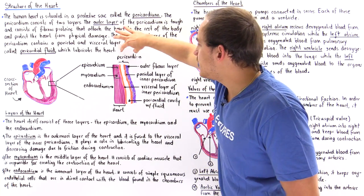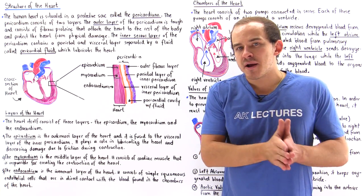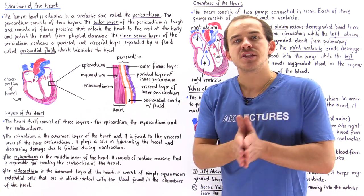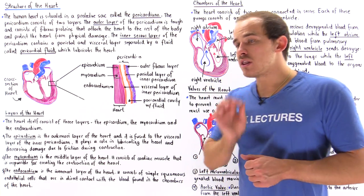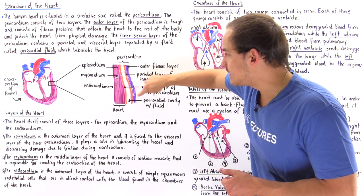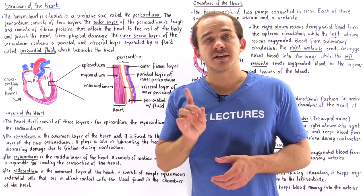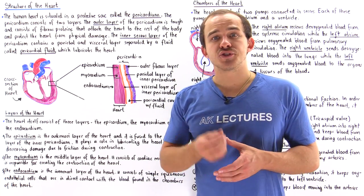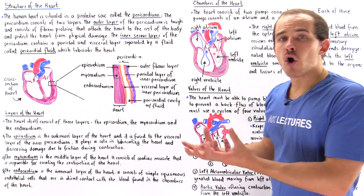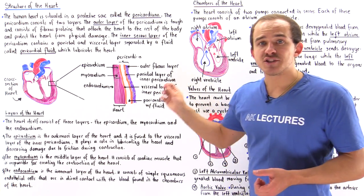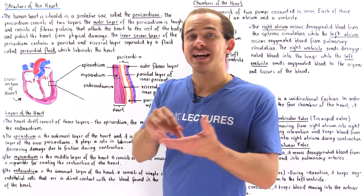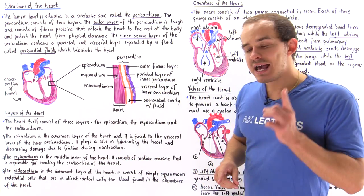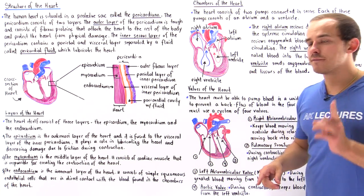The pericardium can be divided into two layers: the outer layer and the inner layer. The outer layer, shown in purple, consists of strong fibrous proteins that give the pericardium its strength. The outer layer is responsible for attaching the heart to different parts of the body and also protects the heart from physical damage.